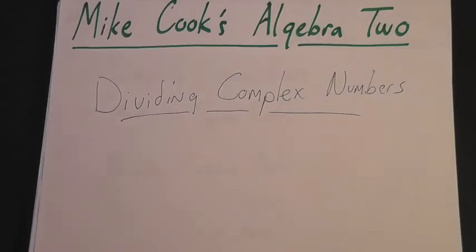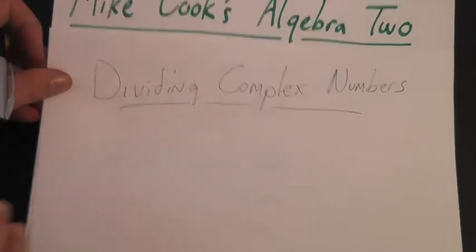Now let's look at dividing complex numbers. If you have 5 divided by 7i, remember the rule that you can't have a square root in the denominator. We have a similar rule that says we don't want to have an i in the denominator. If there's an easy problem like this where it's just 5 over 7i, then you just need to get the i out.